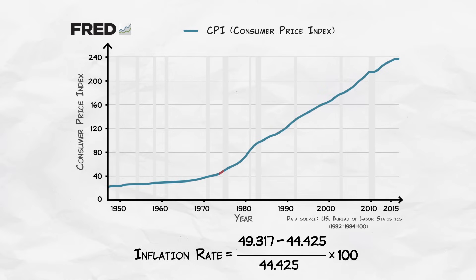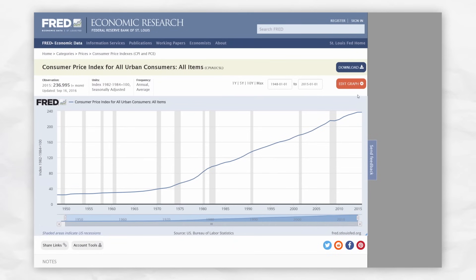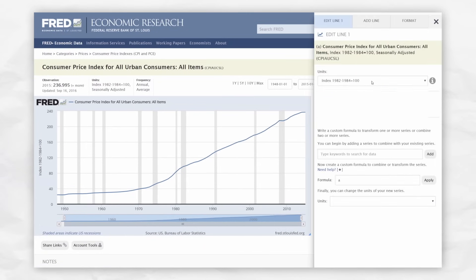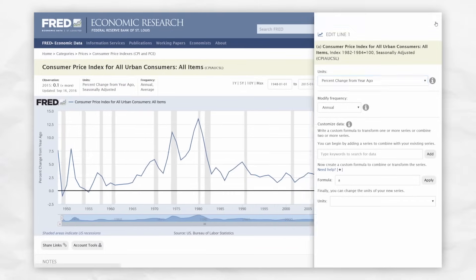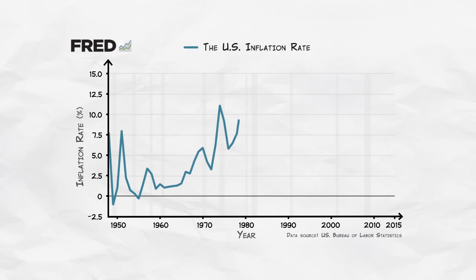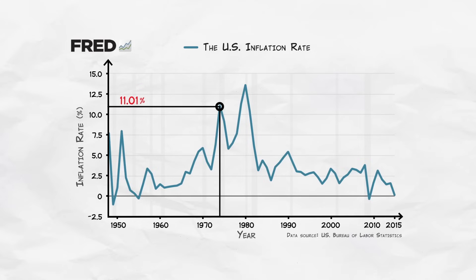We can now calculate that the rate of inflation over this year was 11.01%. The calculations can be a little bit tedious, so let's have FRED do the work. We'll change the units to percent change from one year ago. We now see the annual inflation rate in the United States from 1948 to 2016. Notice that in 1974, the inflation rate was 11.01%, just as we calculated.